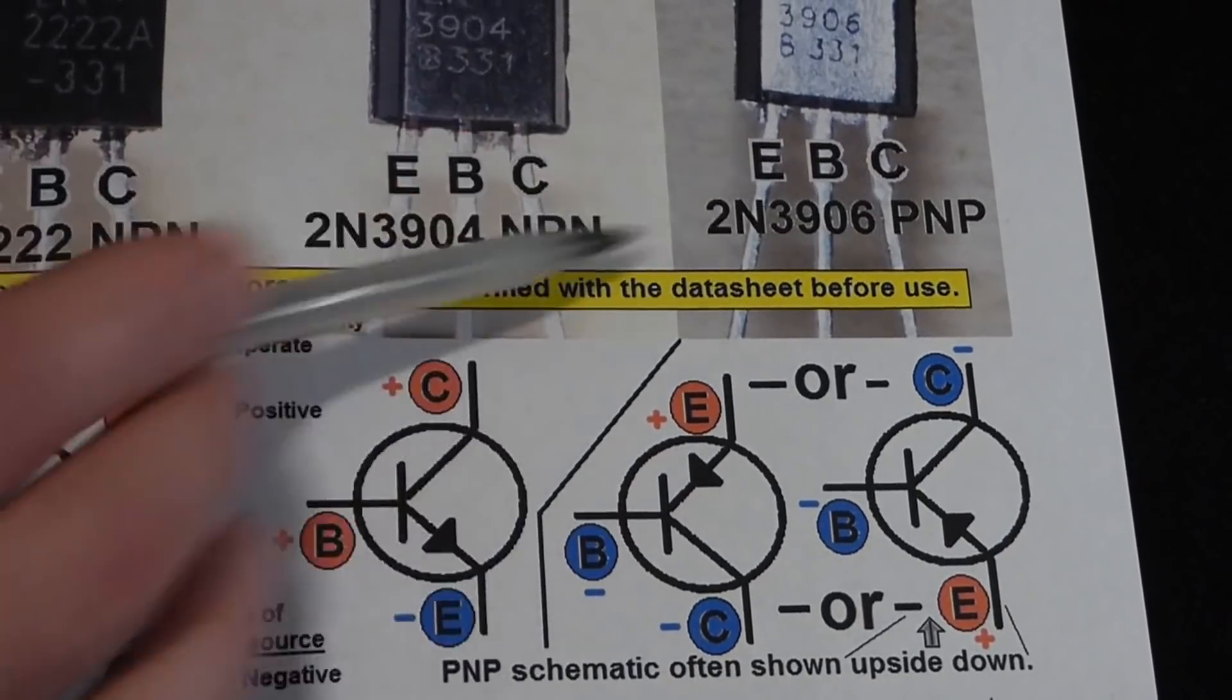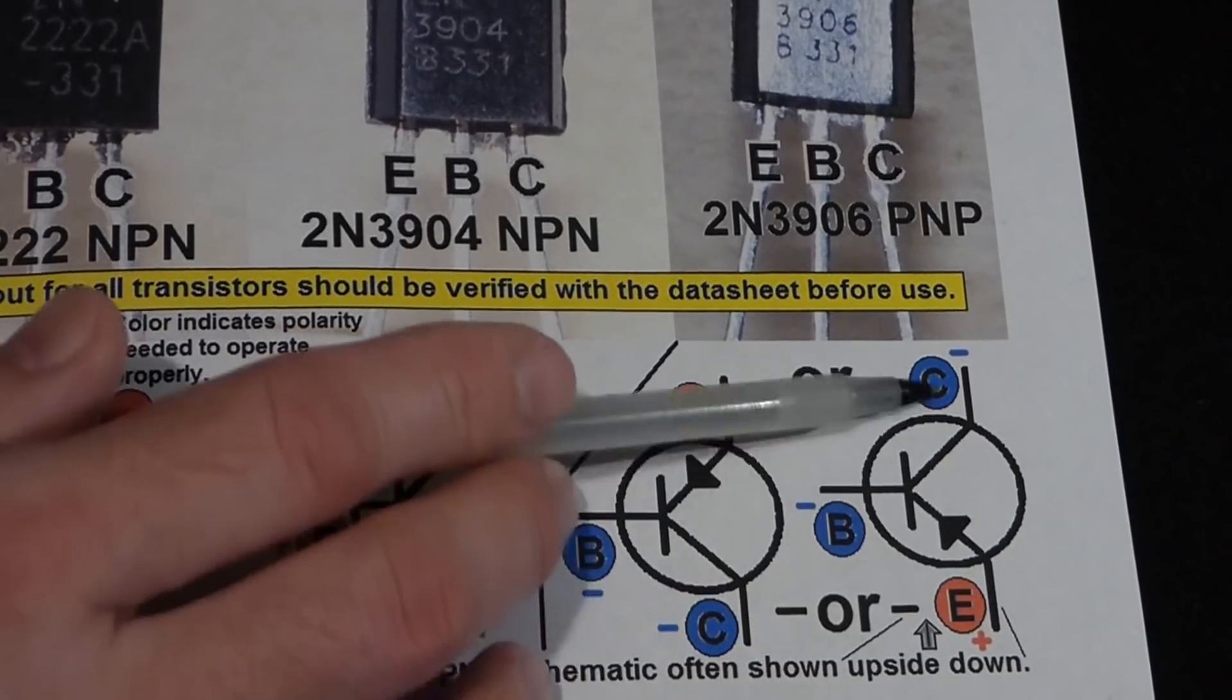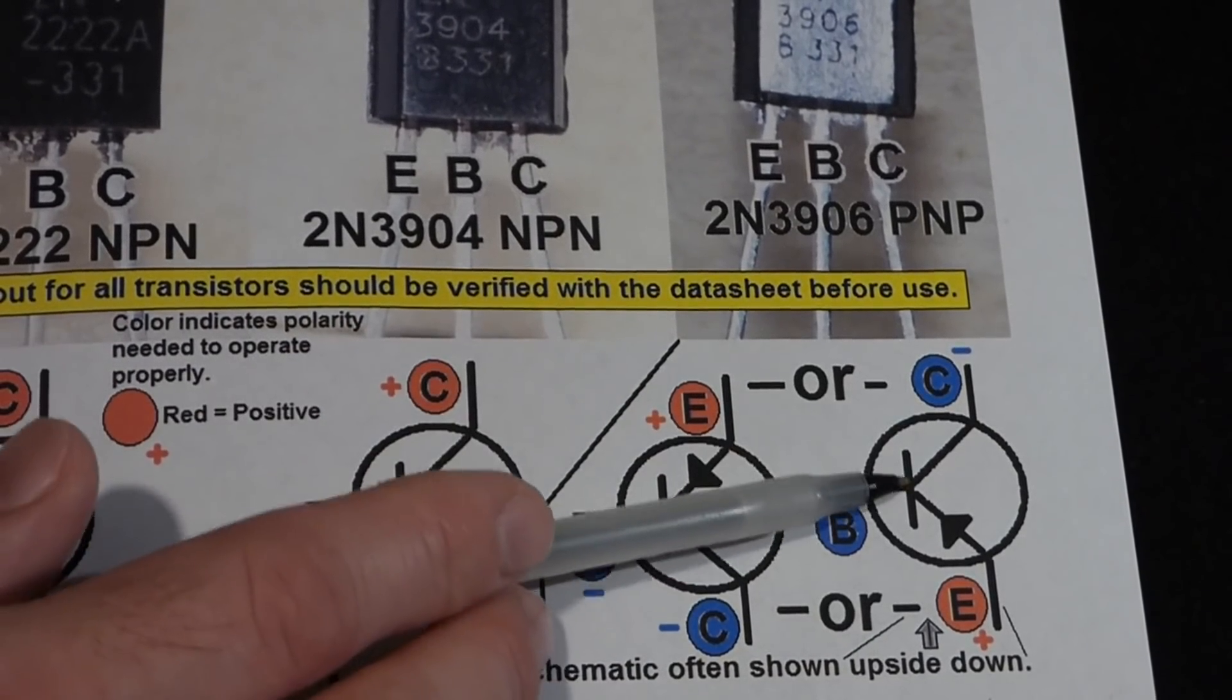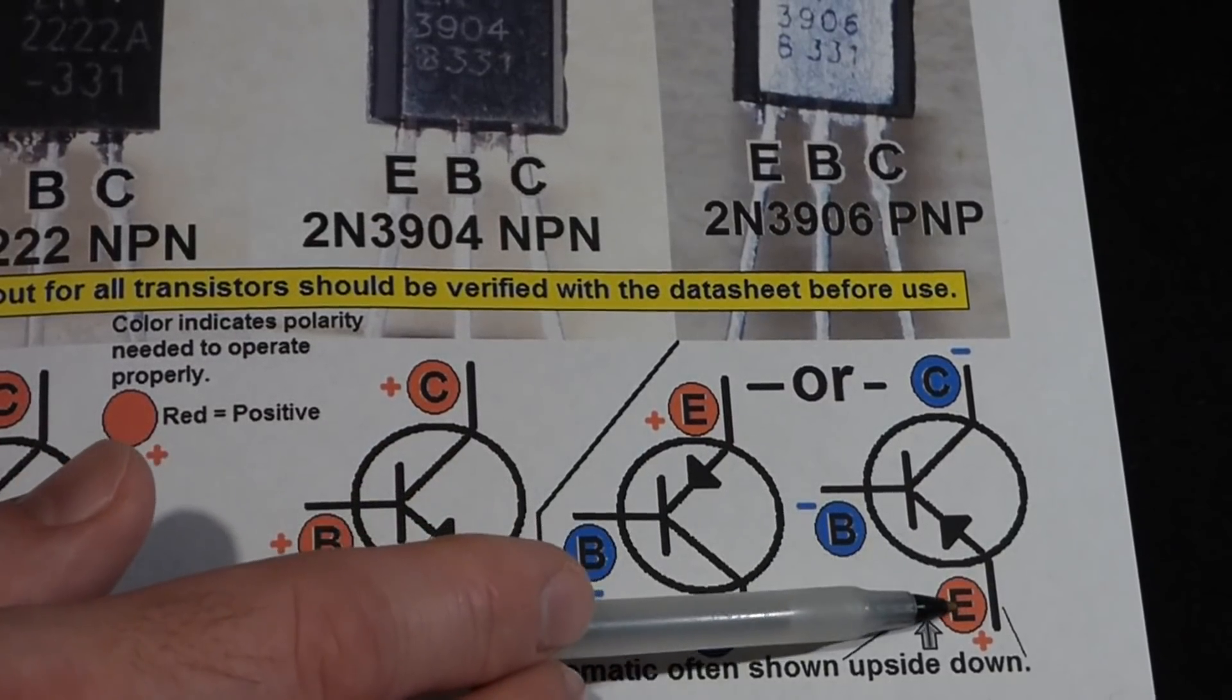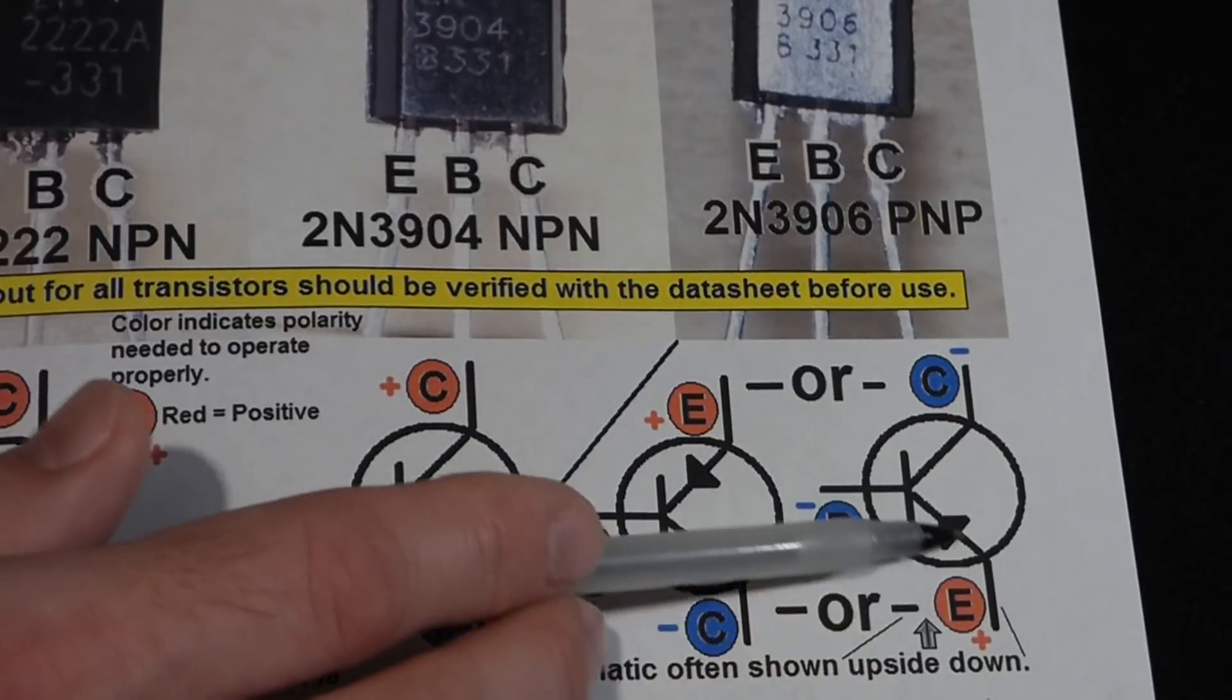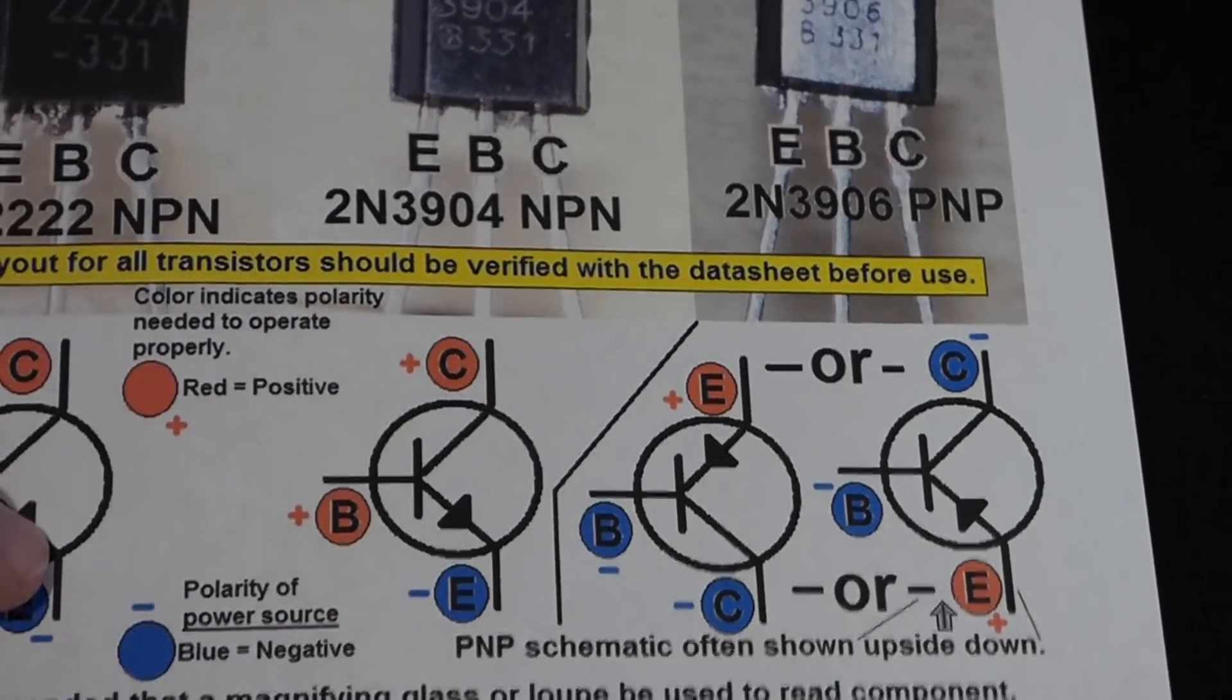Now, PNP type transistors are the opposite. You want the collector more negative than the emitter. Usually, this is attached to the power supply with other components also along the path on either side. But, with the PNP type transistor, now the base needs to be more negative than the emitter for conduction. If you go positive to negative, you need the base more negative than the emitter to conduct. And, in the process, it will also let current conduct from emitter to collector again.